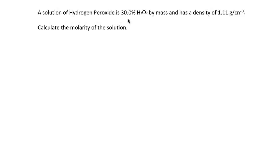A solution of hydrogen peroxide is 30% H2O2 by mass and has a density of 1.11 grams per centimeter cubed. Calculate the molarity of the solution.